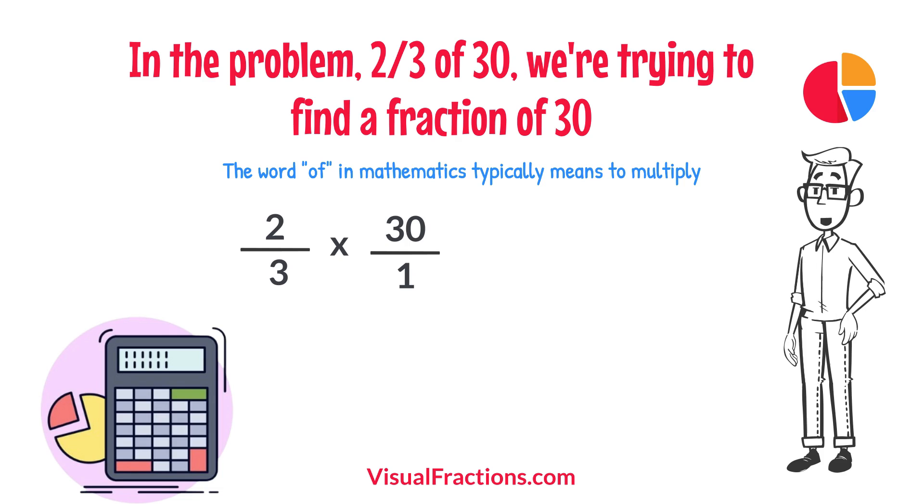Now, we proceed to multiply across. First, multiply the numerators: 2 times 30 equals 60.